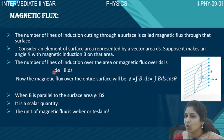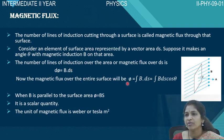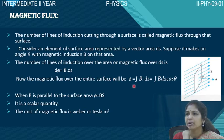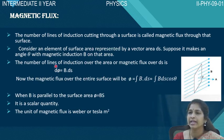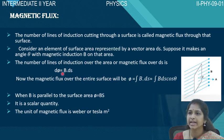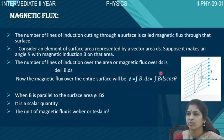Now that we know the magnetic flux due to a small area element dΦ = B·dS, we can find the total flux by adding contributions from all elements. Instead of adding, the summation is replaced by integration. Integrating the equation: ∫dΦ = ∫B·dS, and since ∫dΦ = Φ, we get Φ = ∫B·dS cosθ. This is the expression for magnetic flux.